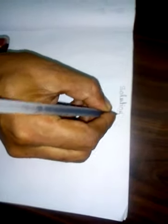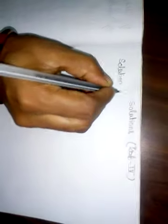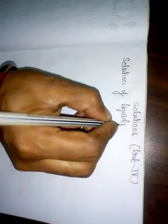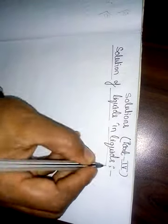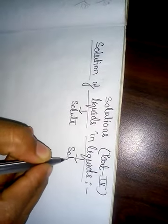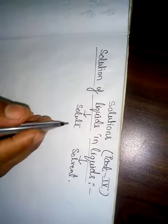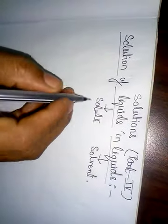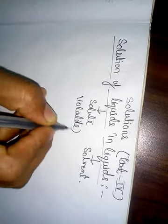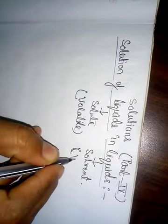This is Solutions Chapter Part 4. In this part, I will be discussing solutions of liquids in liquids — where one liquid is the solute and another liquid is the solvent. In Part 3, I covered solutions of gases in liquids. Now, this liquid solute is again a volatile solute and the liquid solvent is also volatile.